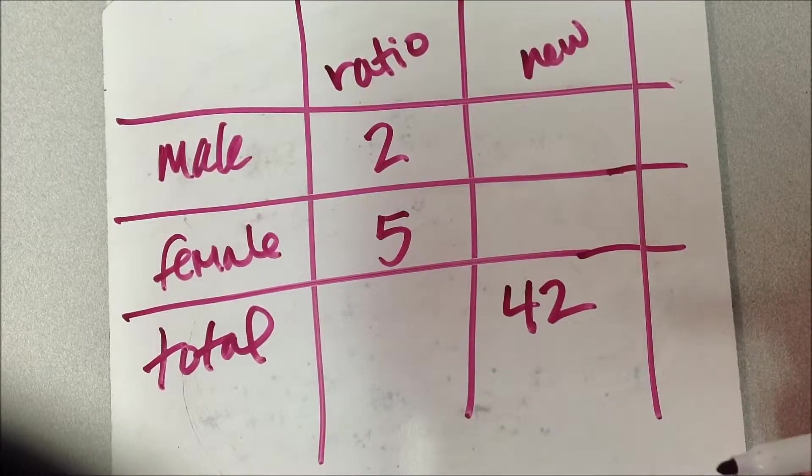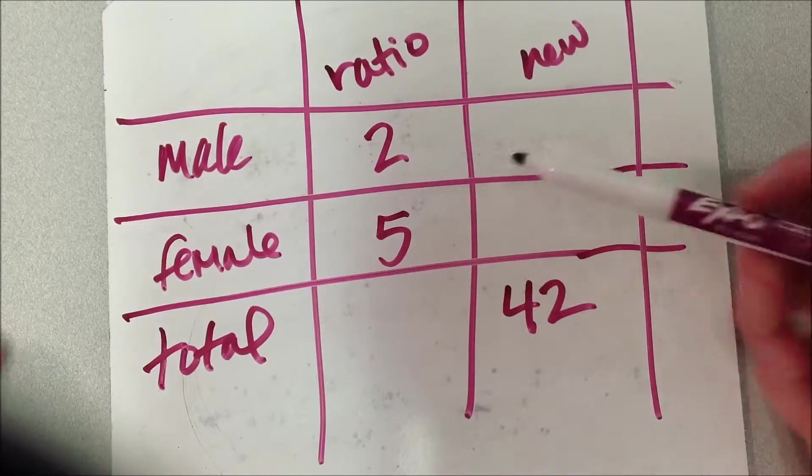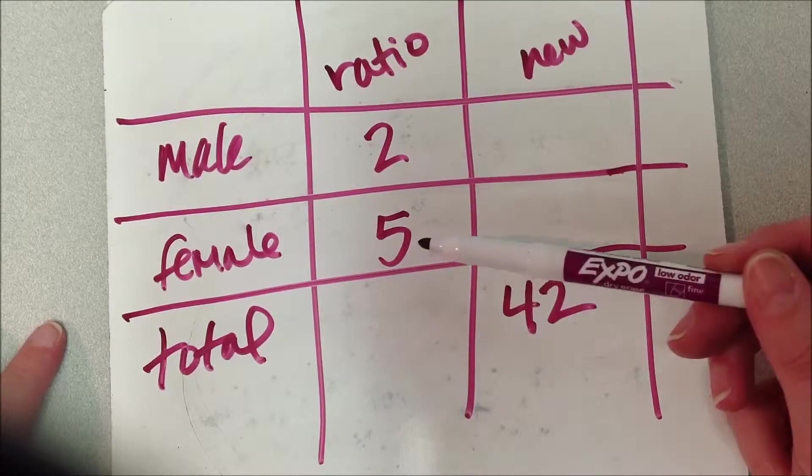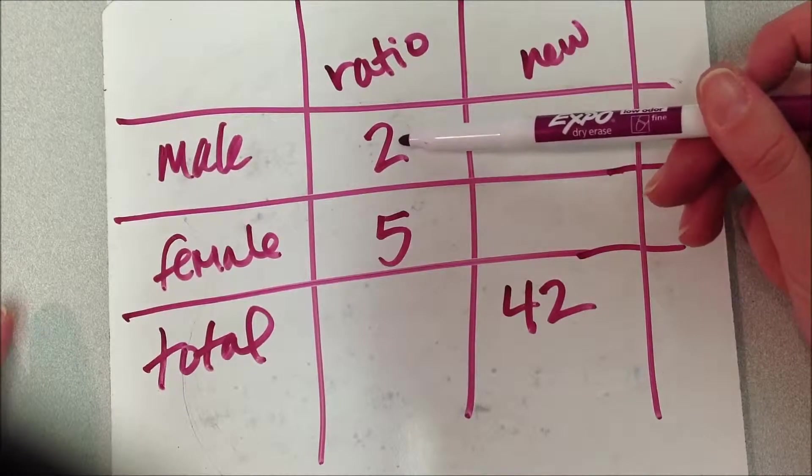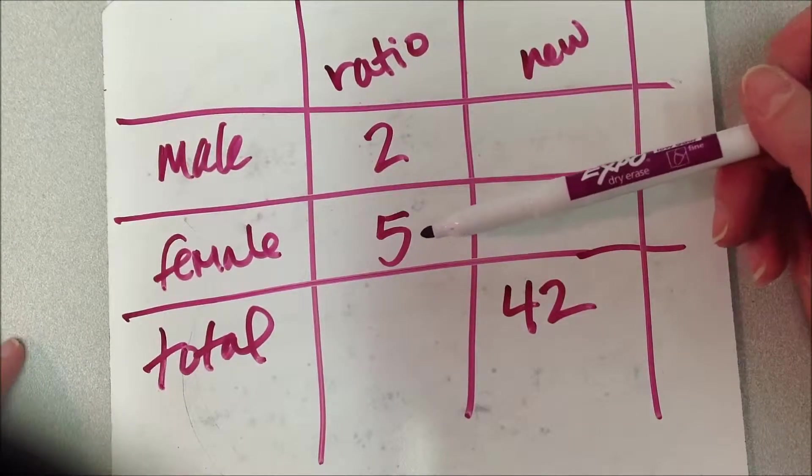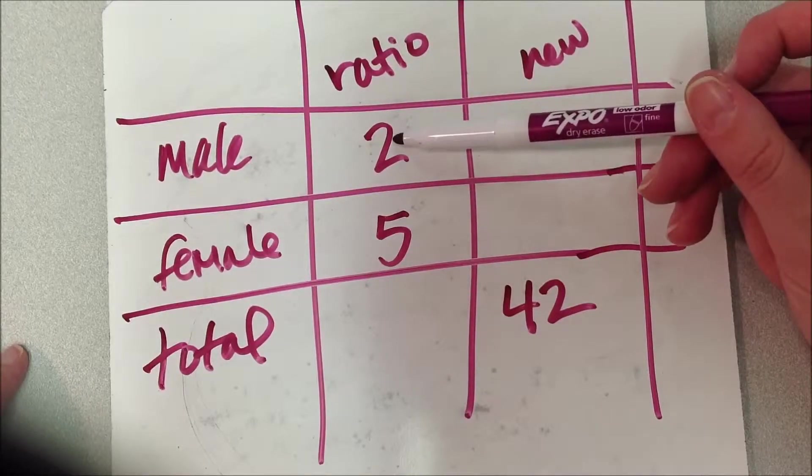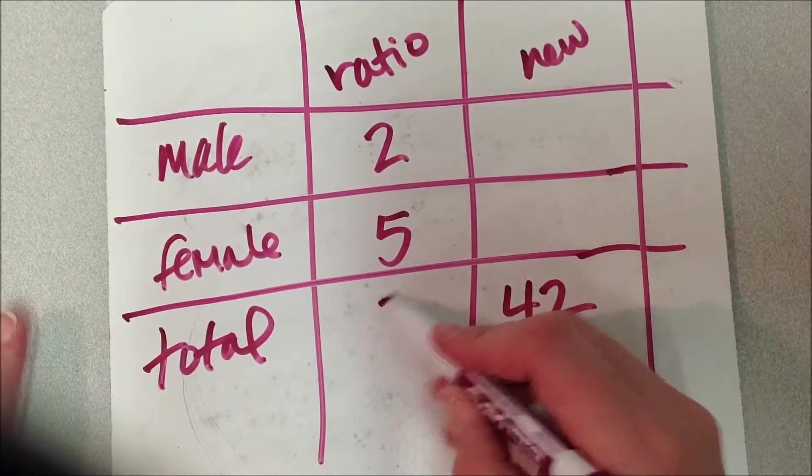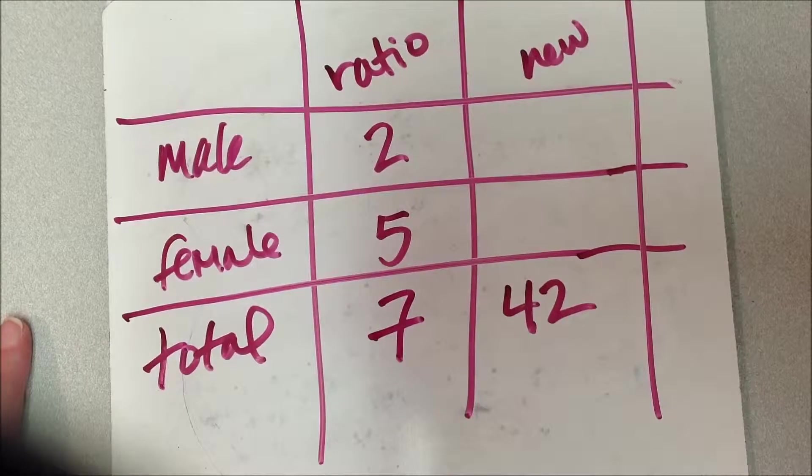Let me show you how we get this number to fill in this spot, and it's really very simple. If you think about it, 2 and 5, if I add those together, those make up the whole amount. So what is 2 plus 5? Seven. There it is.